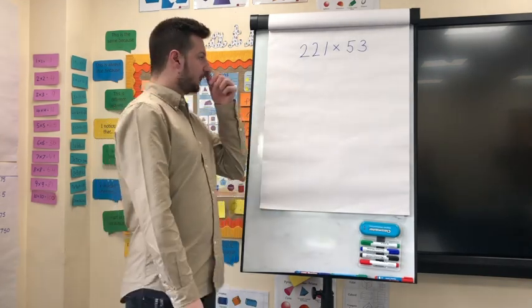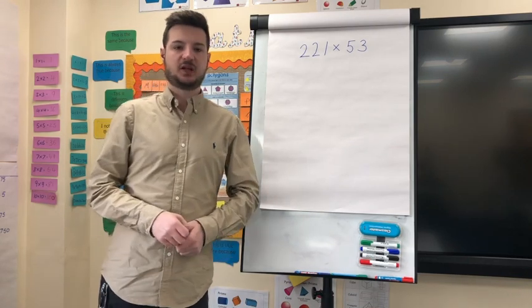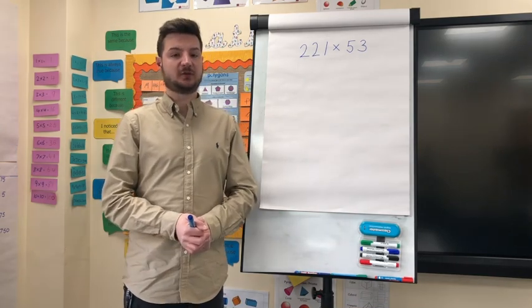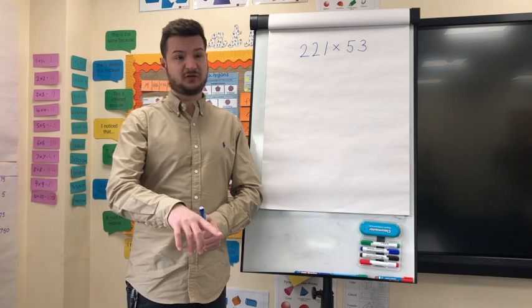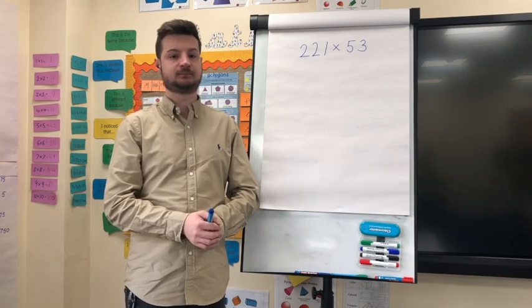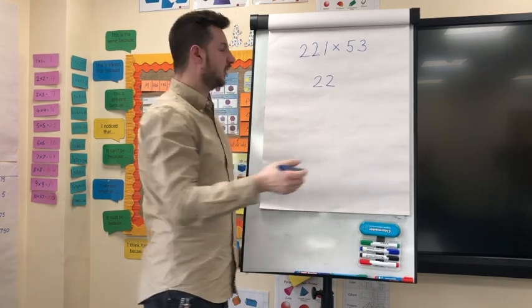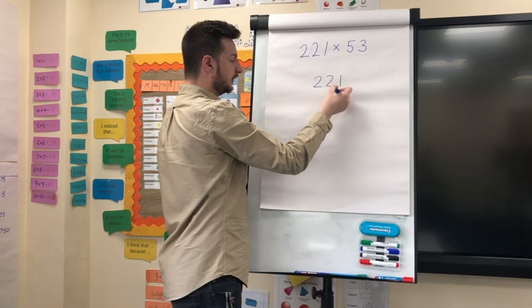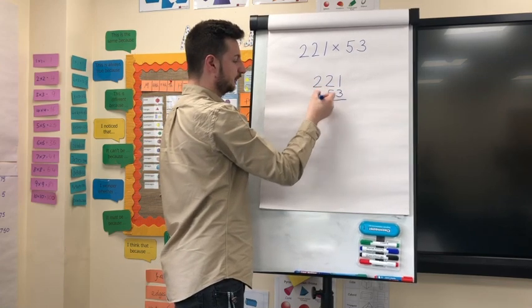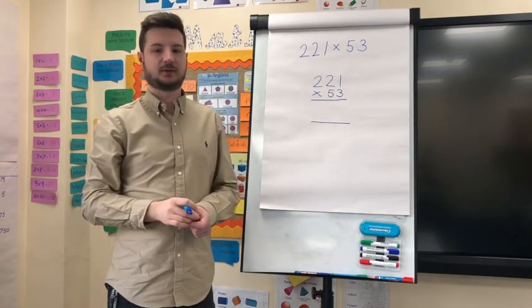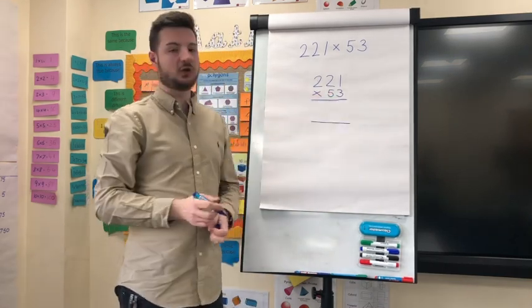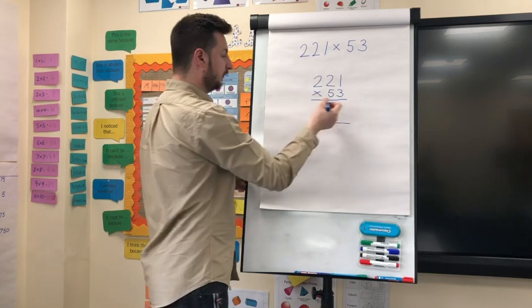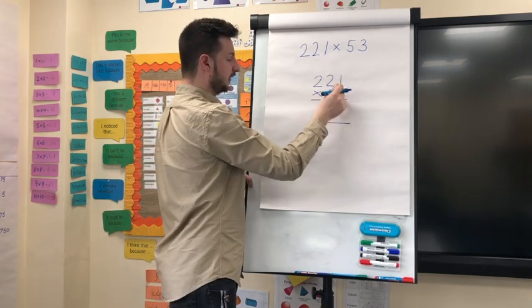Let's work through this problem together: 221 multiplied by 53. The first step, as before, is to write your calculation out using the formal long multiplication method — pause the video and have a go at home. We write 221 first, then 53, the smallest number, below. We start with the ones column — the smallest digit in the smallest number — which is 3. 3 times 1 is 3; 3 times 2 is 6; and 3 times 2 is 6.